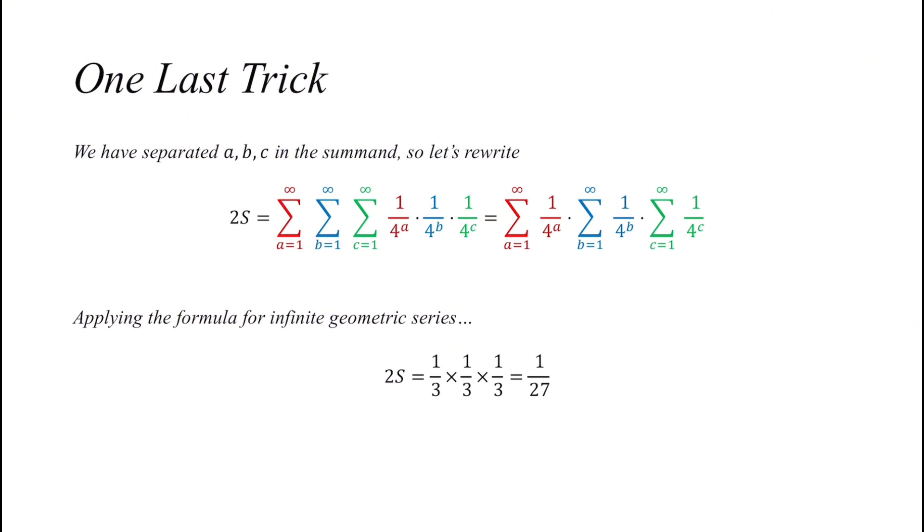And this is simply the formula for infinite geometric series. Hence 2S is 1/3 times 1/3 times 1/3, which is 1/27. And divided by 2, we get our final answer S is 1/54. So this problem might seem really problematic, might seem monstrous, but if you try simple ideas as such, you will solve it pretty quickly.